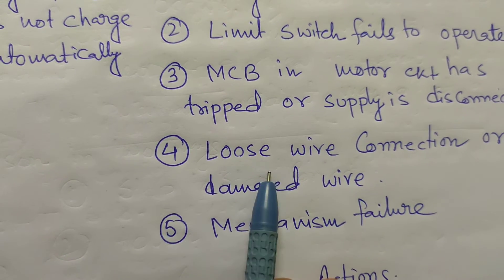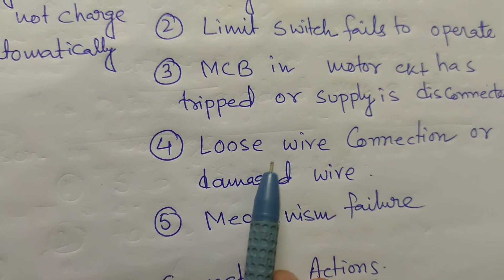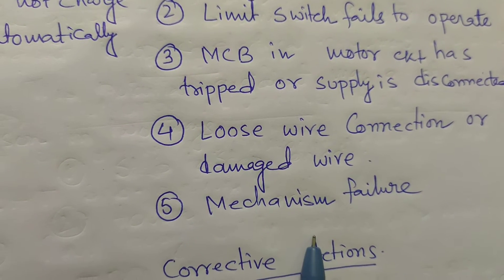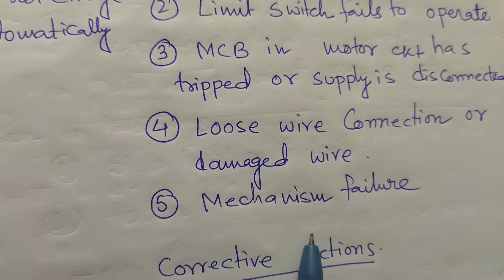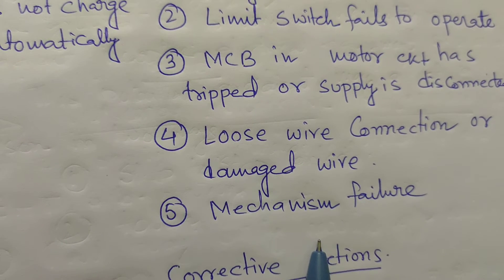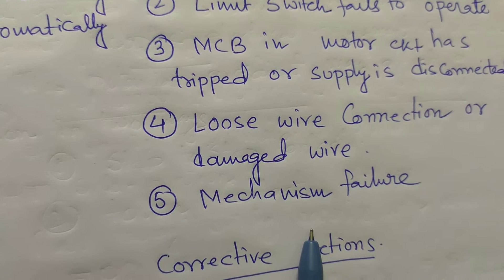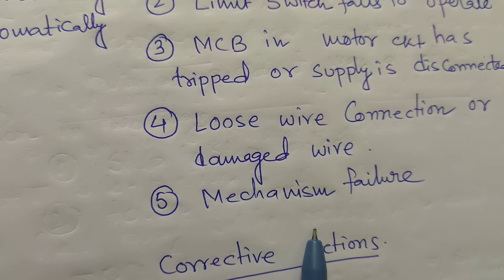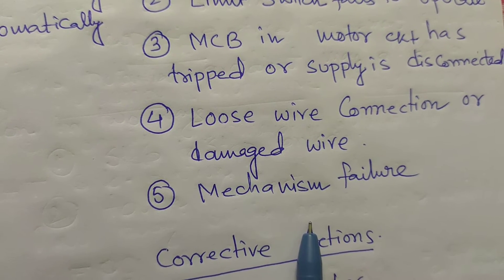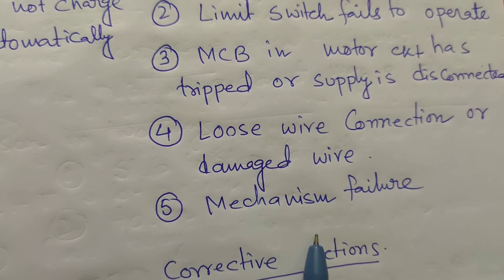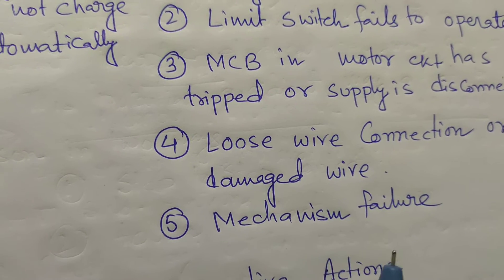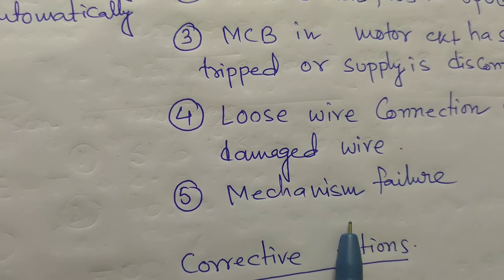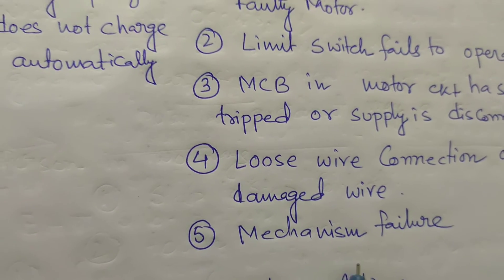Loose connections should be checked thoroughly during winter maintenance or preventive maintenance. Mechanism failure is another reason — the mechanism has mechanical parts with latches, where one latch supports another for closing operations. The spring also assists in both closing and tripping operations simultaneously.